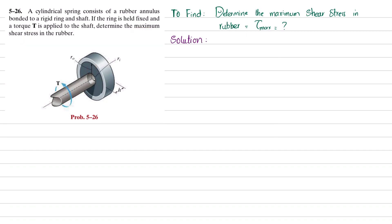Let's start with the solution. We know that shear stress is equal to shear force per unit area. You can see this is the shaft, and if you draw the cross section of this shaft, there will be a center. Let the radius of this shaft be r.